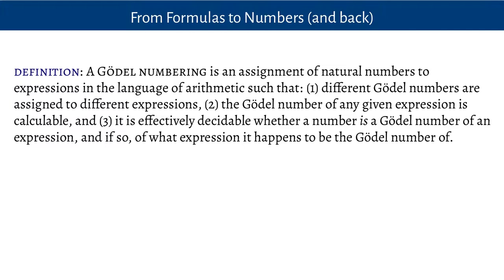This is something which is due to the logician Kurt Gödel. Gödel numbering is a way of assigning natural numbers to expressions in the language of arithmetic so that these three criteria are satisfied: different Gödel numbers are assigned to different expressions; the Gödel number of a given expression can be calculated; and it's effectively decidable, or recursive, to decide whether a number is a Gödel number of an expression, and if so, what expression it is the Gödel number of.